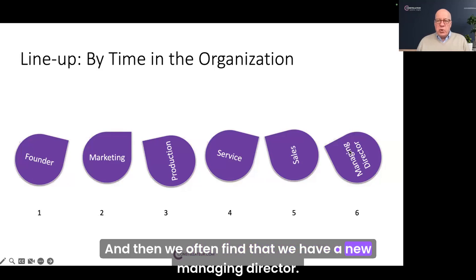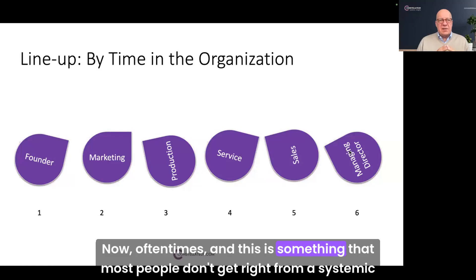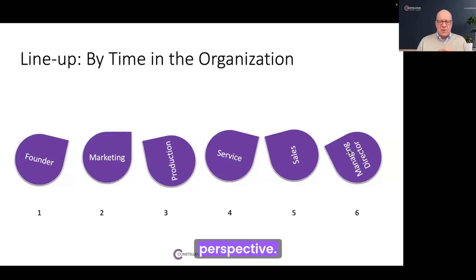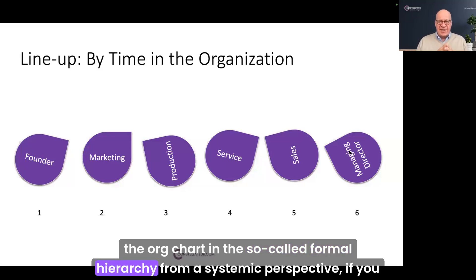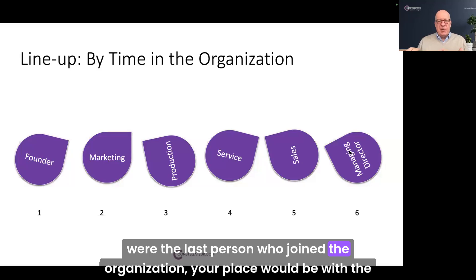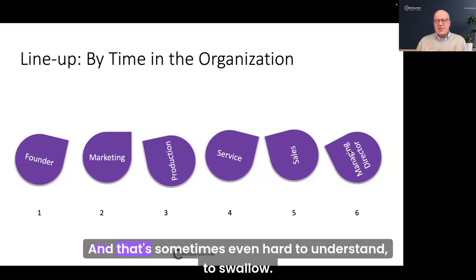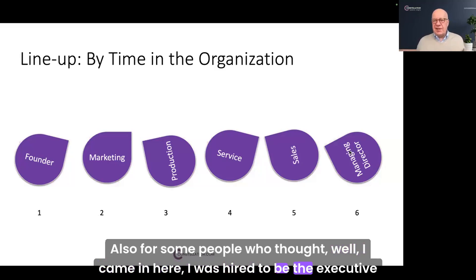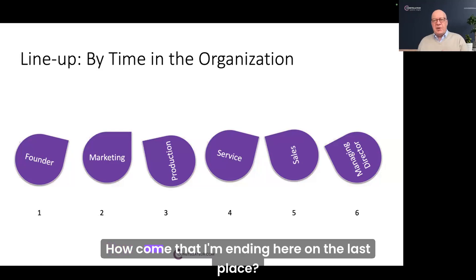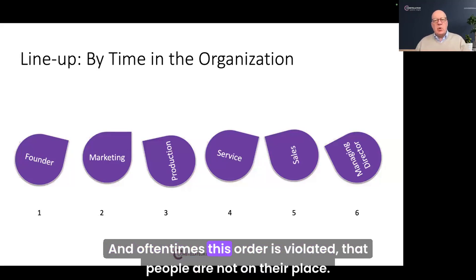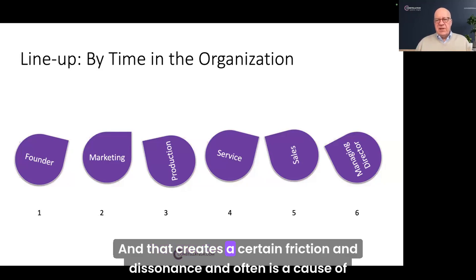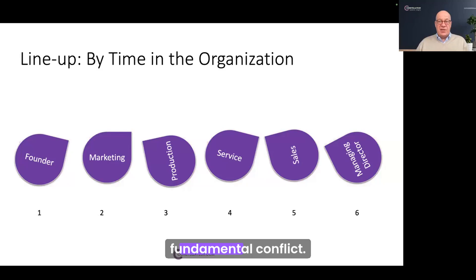We often find that we have a new managing director. And this is something that most people don't get right from a systemic perspective: even if you are responsible for the organization and have the highest rank in the formal hierarchy, from a systemic perspective, if you were the last person who joined, your place would be with the lowest rank. That's sometimes hard to swallow for some people. This is a fundamental order in organizations, and often this order is violated — people are not in their appropriate place — which creates friction, dissonance, and is often a cause of fundamental conflict.